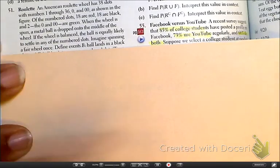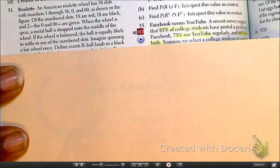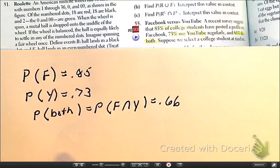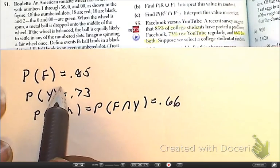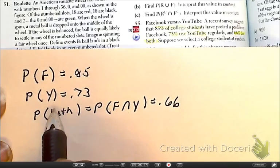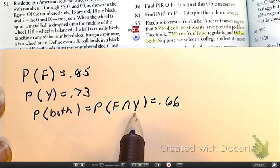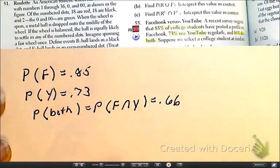The first thing I want to do is just to write everything out that they said in that paragraph. Let's put it in probability notation. So the probability of Facebook is 0.85, YouTube is 0.73, and the probability of both, and here's the correct notation, is 0.66. Okay, so let's make that table.